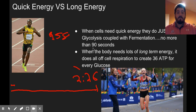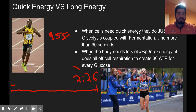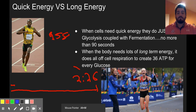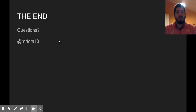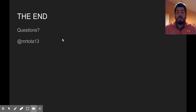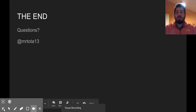Just a great example: less than 90 seconds, you're going to be doing just glycolysis with lactic acid fermentation, like a sprinter. If you're doing long-term energy — more than 90 seconds — you're going to be doing all of cell respiration. After about 20 minutes, you start to break down fat and bigger sugars. That's it for this lesson. Make sure you know fermentation, the difference between quick energy and long energy, the two types of fermentation, and who does them. Review the key terms, watch the lesson, take good notes. If you have any questions, you can always email me or tweet at me at Mr. Tota 13. Have a great night, thanks.